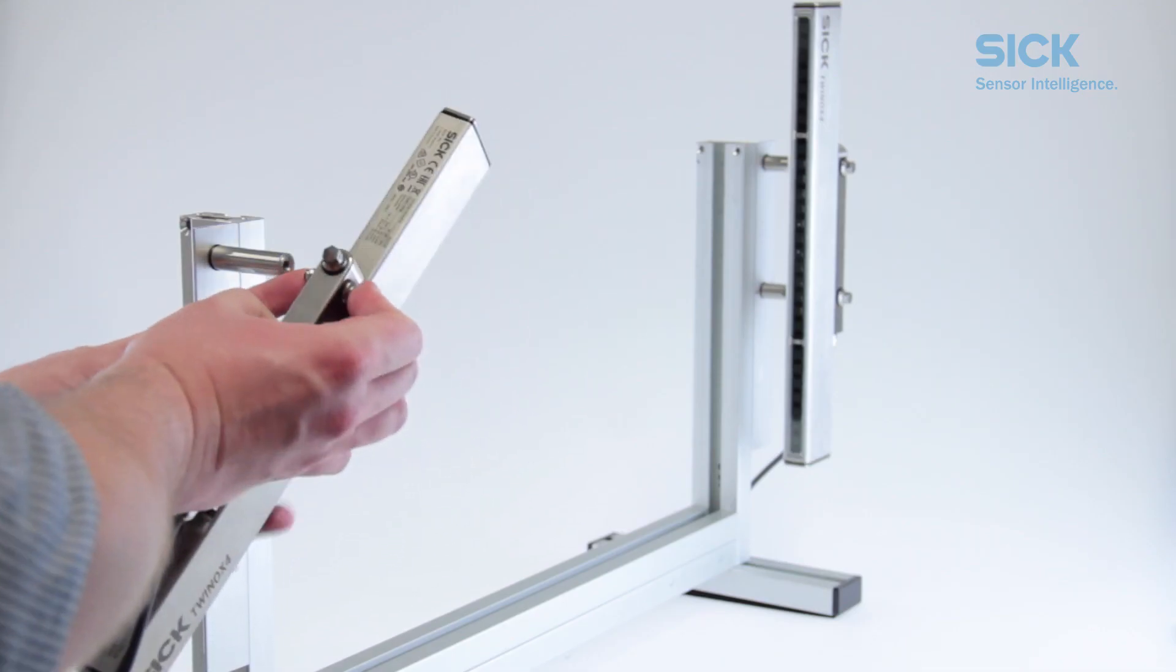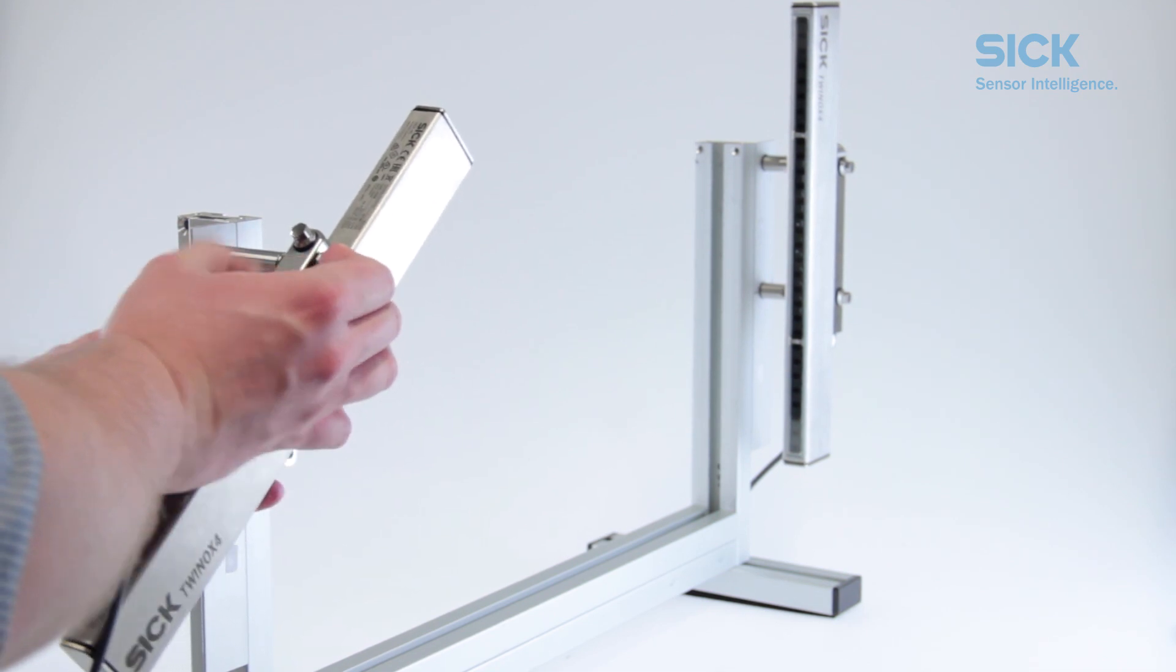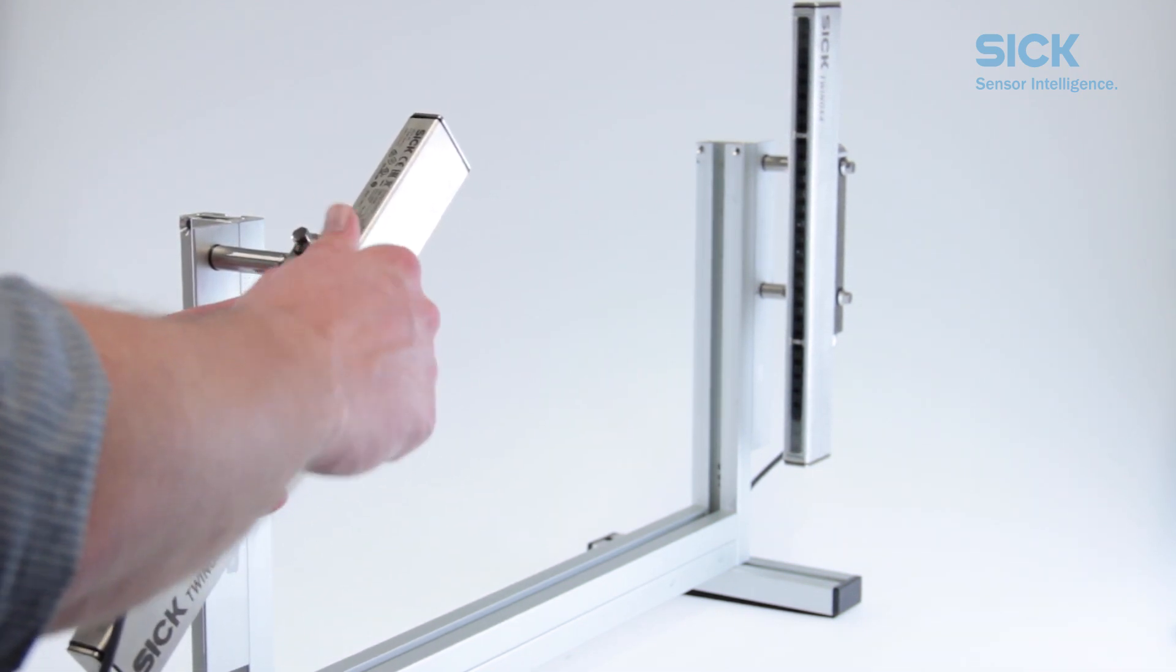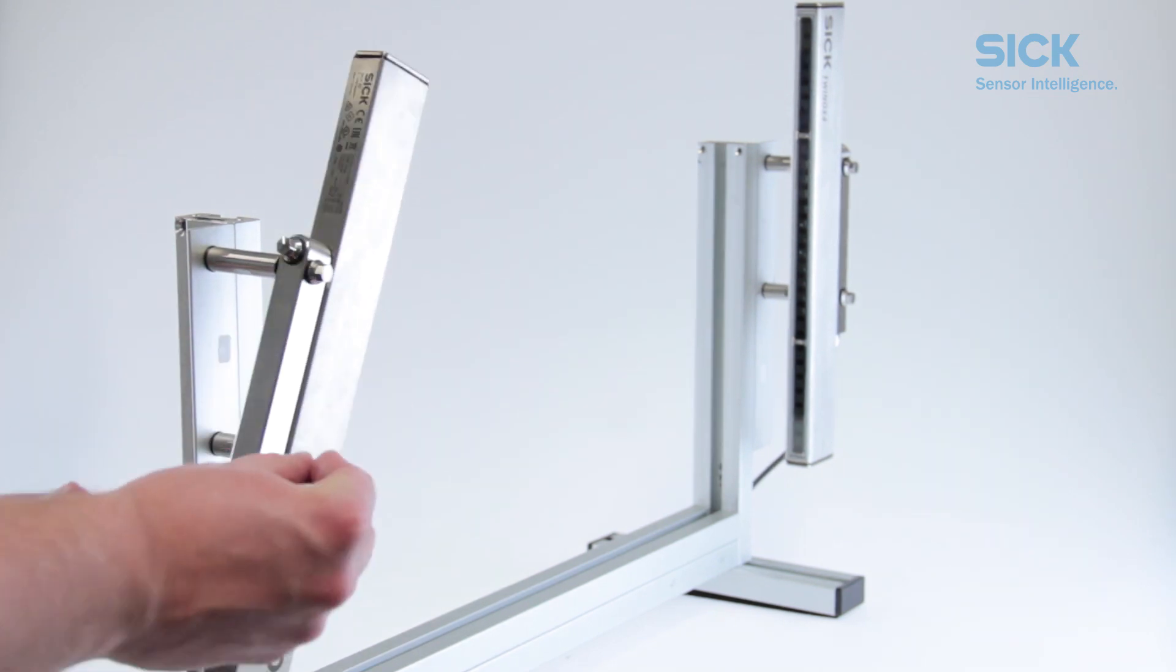Tighten the screw so that it holds the light curtain onto the spacer, but leave a little leeway for the moment. Do the same for the second spacer.